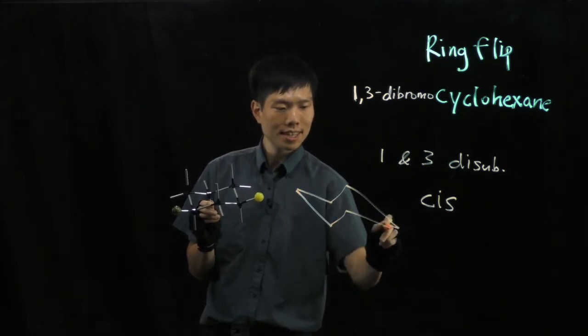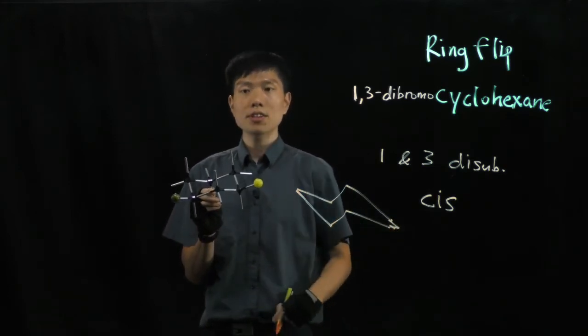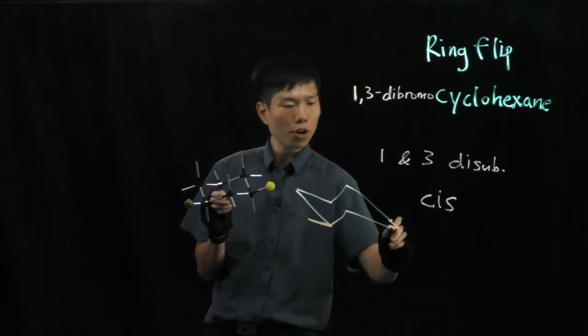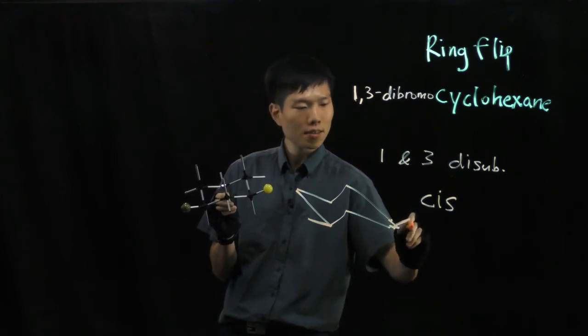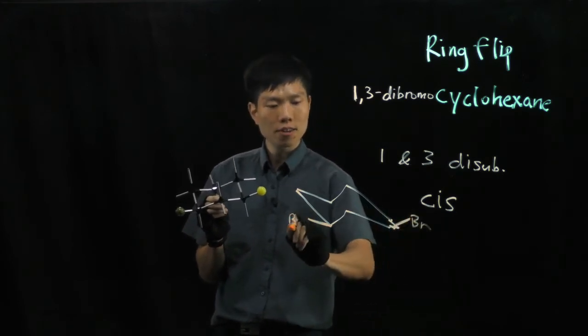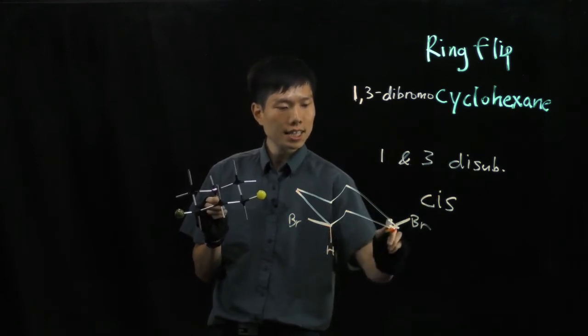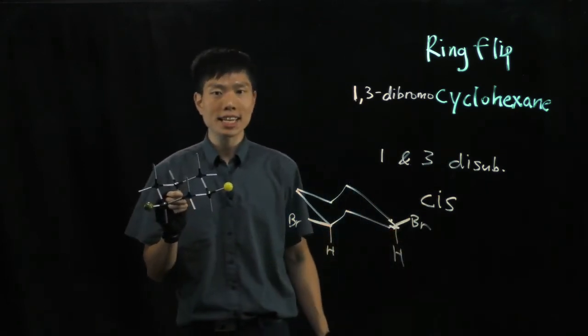And then you have the first atom here and the last atom. So they both point to the equatorial positions - Br, Br. And because we have up and up, they are cis. So this is how it looks like.